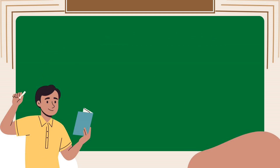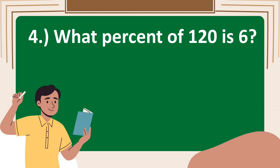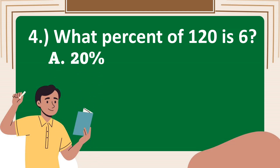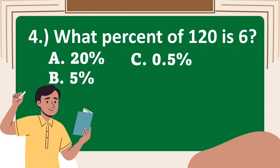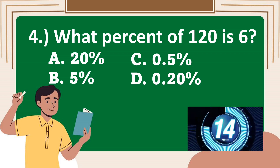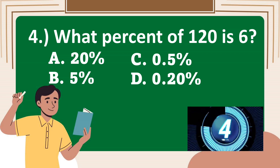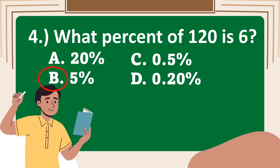Number 4. What percent of 120 is 6? A. 20%, B. 5%, C. 0.5%, D. 0.20%. Your timer starts now! The correct answer is B. 5%.